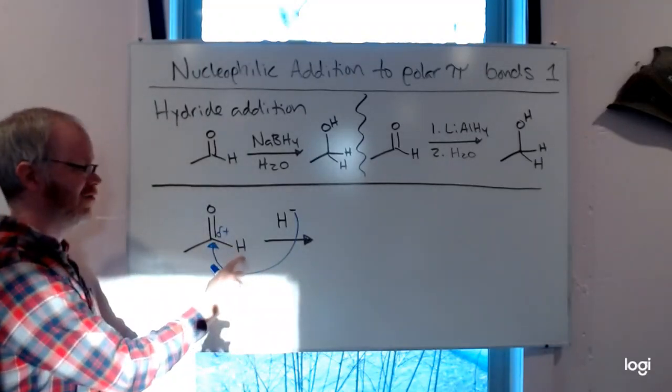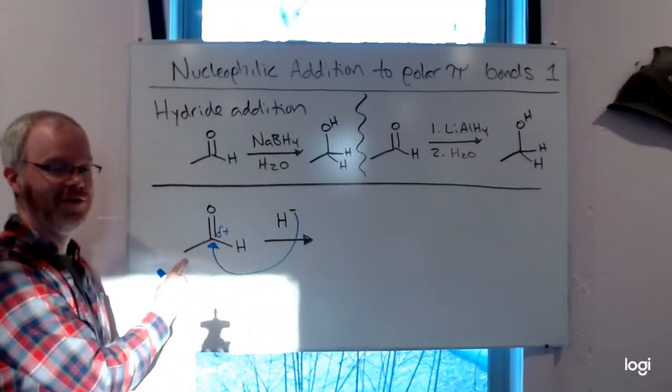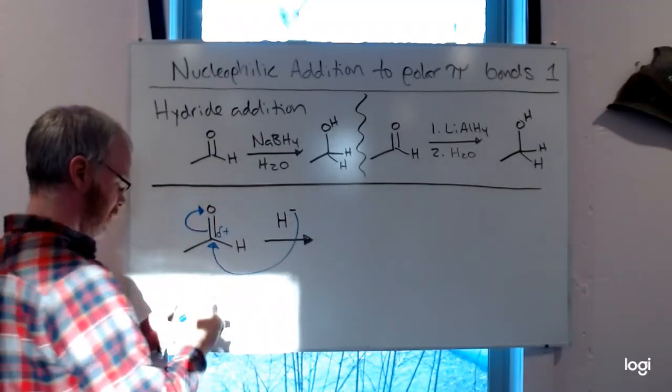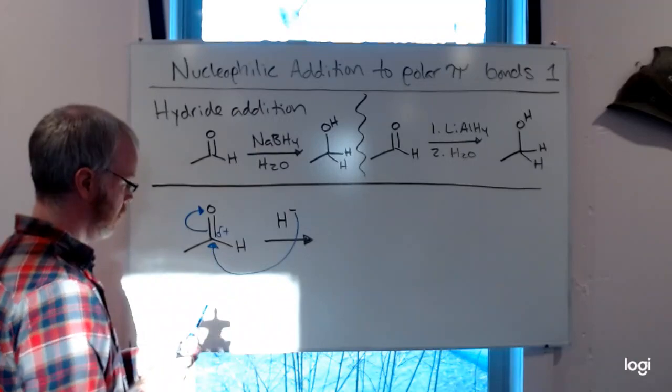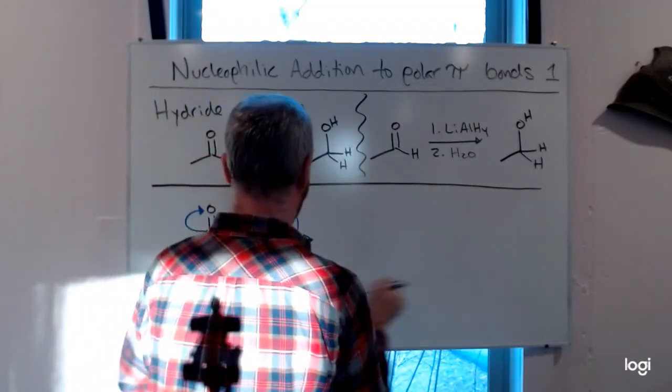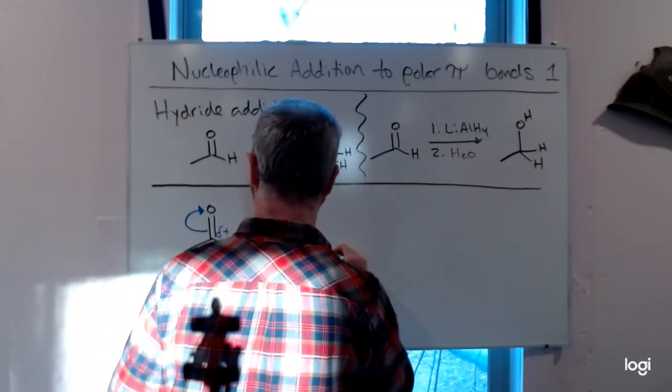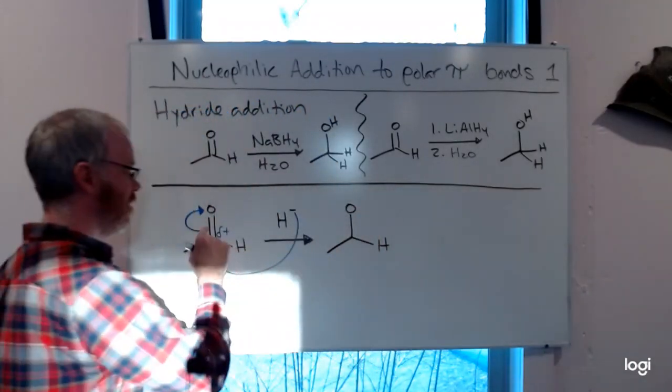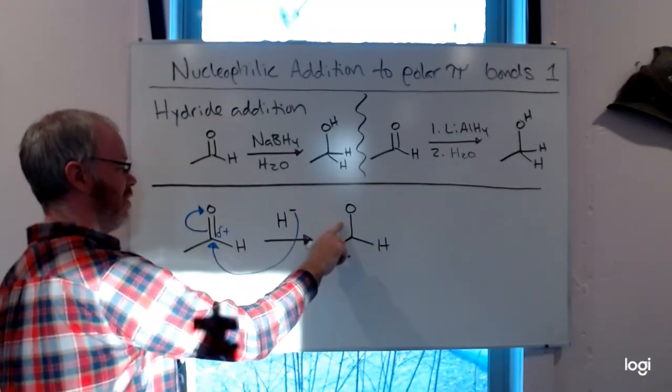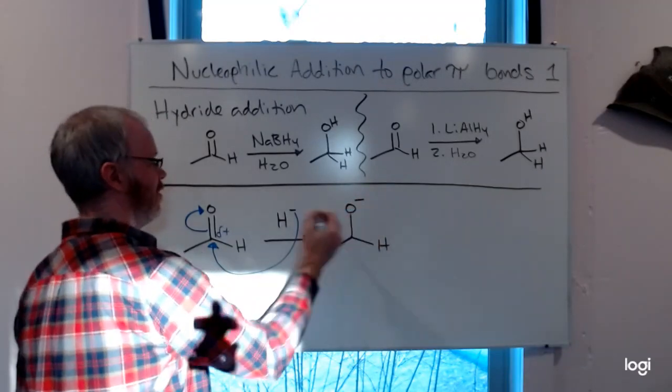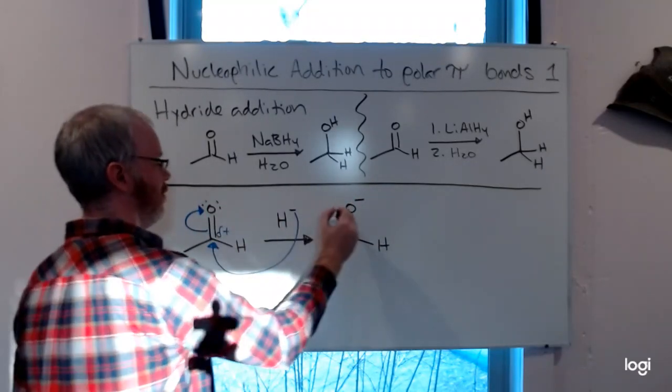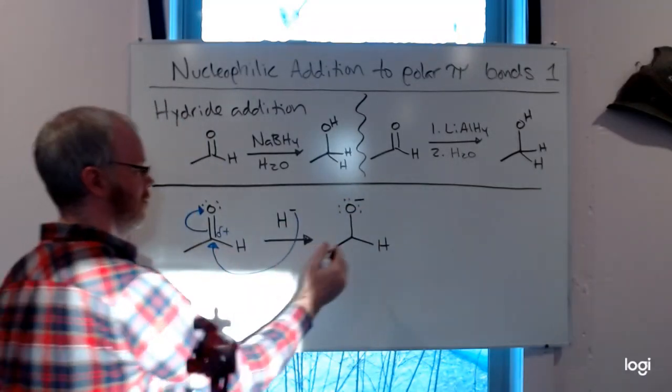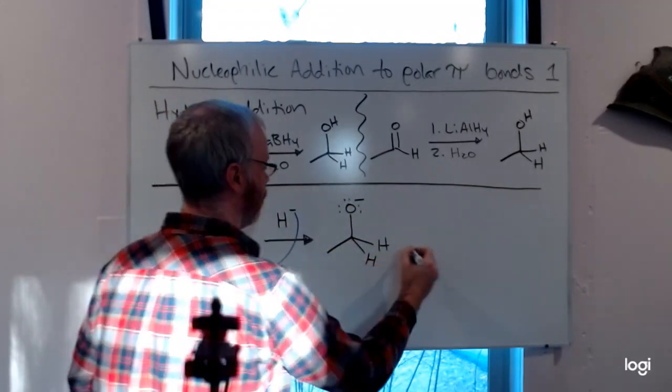Neither hydrogen nor this methyl group are good leaving groups, so those will not break off. Our pi bond will break. So our oxygen is still there, but we broke the pi bond, put the electrons up on the oxygen. Now it's got three lone pairs. And a new hydrogen was added here, so we're most of the way there.